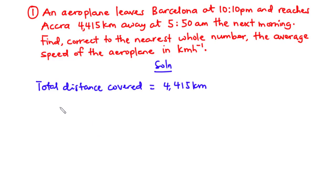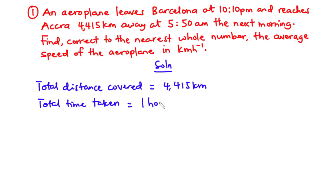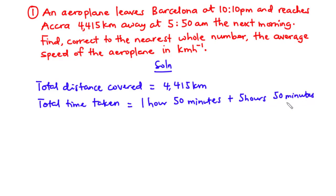Next, we are going to calculate the total time taken. The aeroplane leaves Barcelona at 10:10 pm and then reaches Accra at 5:50 am the next morning. So from 10:10 pm to 12 am is 1 hour 50 minutes, plus from 12 am to 5:50 am is 5 hours 50 minutes. Now to find the total time taken, we are going to add these two time values.